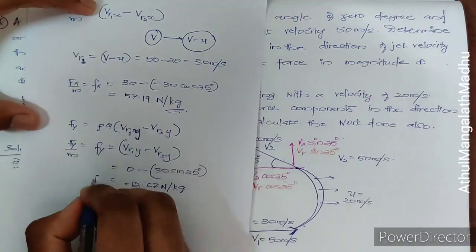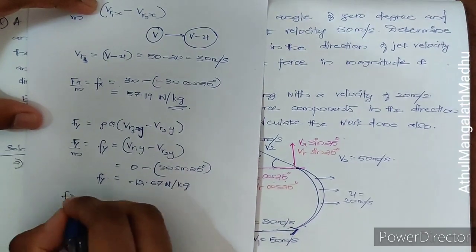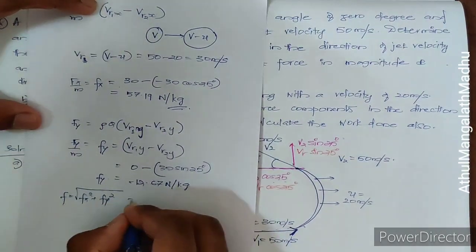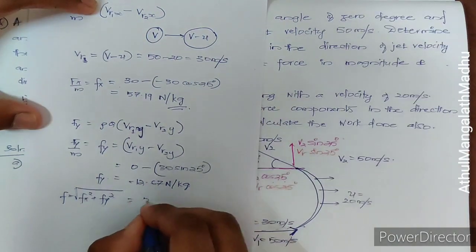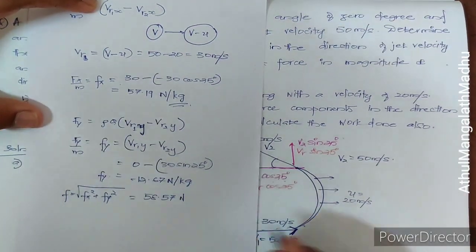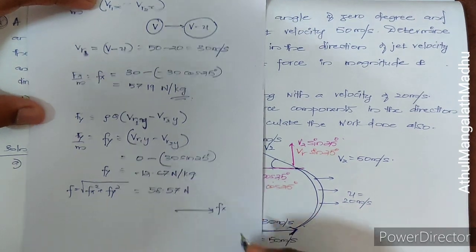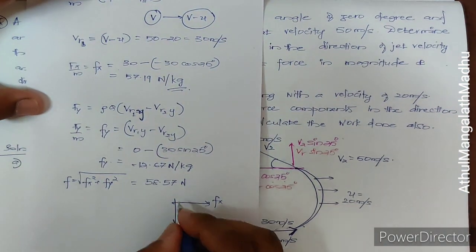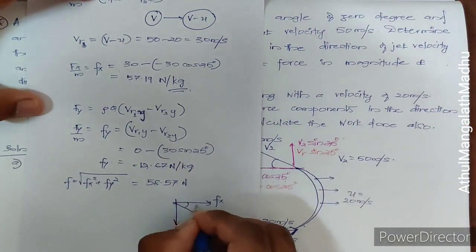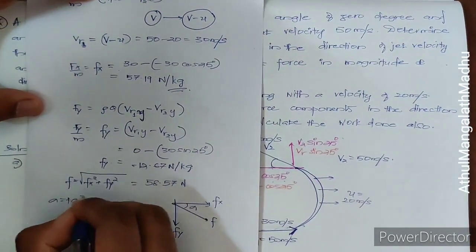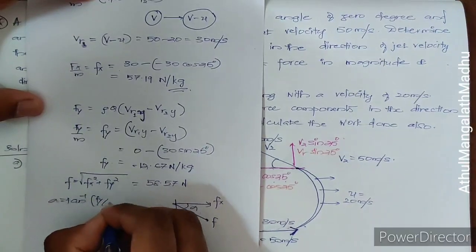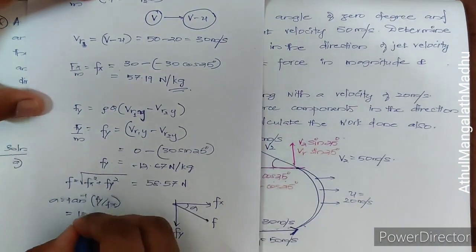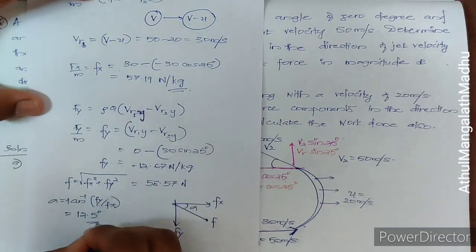After getting fx = 57.19 N/kg and fy = −12.67 N/kg, the resultant force is √(fx² + fy²) = 58.57 Newton per kilogram. The angle alpha = tan⁻¹(fy/fx) = 12.5 degrees.